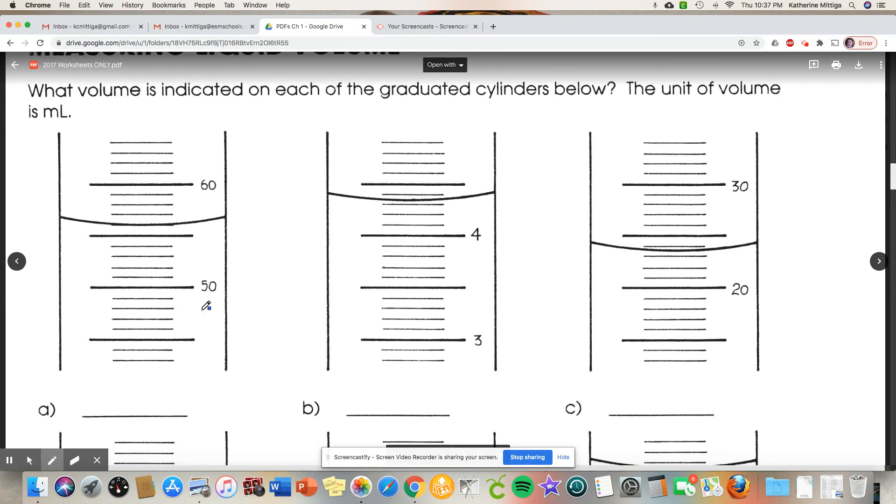First thing we need to do is figure out what the scaling is. Here's 50 and here's 60, which means each of these is worth one milliliter. So this is directly on the 56, so we know the ones, that means we have to estimate the tenths. Notice how it's directly on this line, that's the bottom of the meniscus, the curvature of the liquid. So we're going to call it 56.0 milliliters.